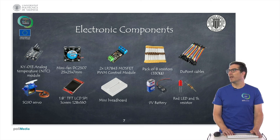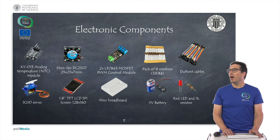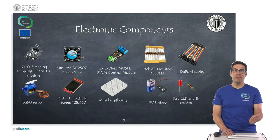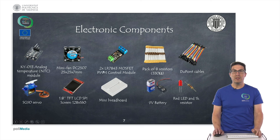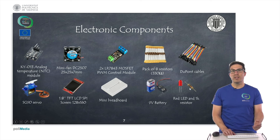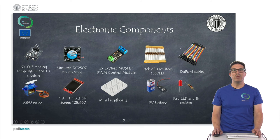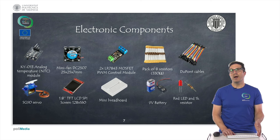These are the electronics we are proposing for this room. We need a temperature sensor — it's an analog sensor. We need a mini fan. We need two MOSFETs, one to control the mini fan and the other to control the heater. The heater will be made from a mini breadboard with a pack of resistors, and also a red LED and a resistor to indicate that it's heating. We also have the screen, the servo, and some cables. These are all the electronic components we will need to work with the living room.